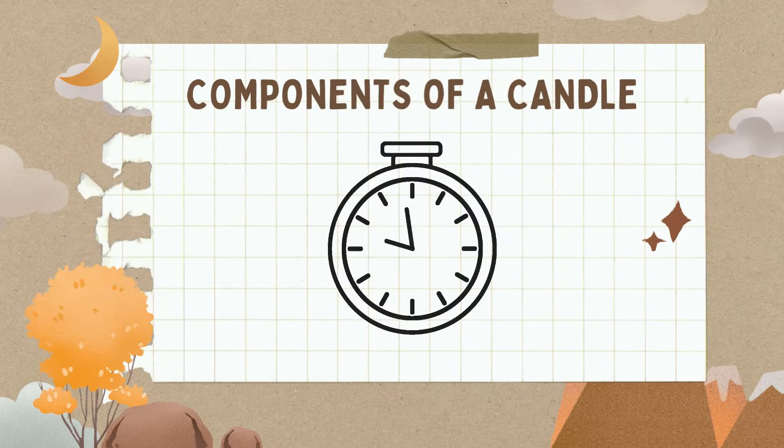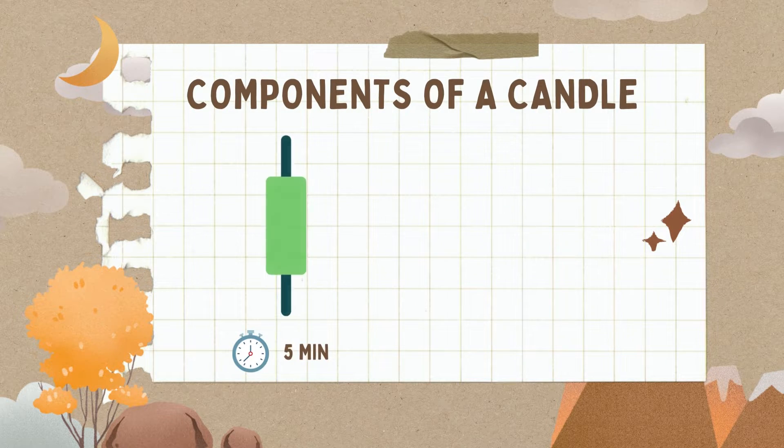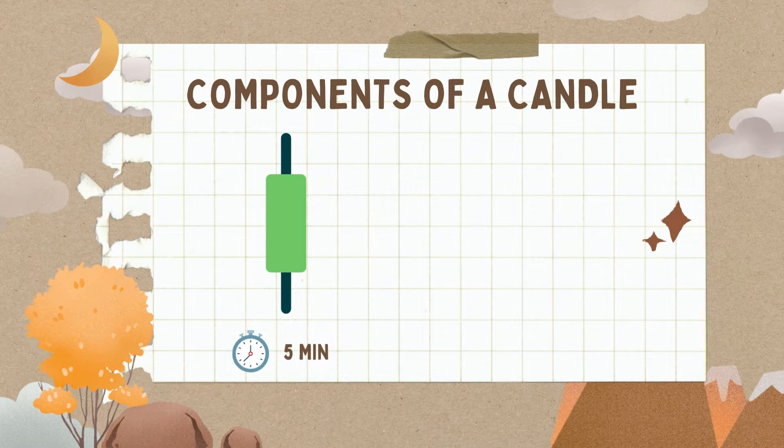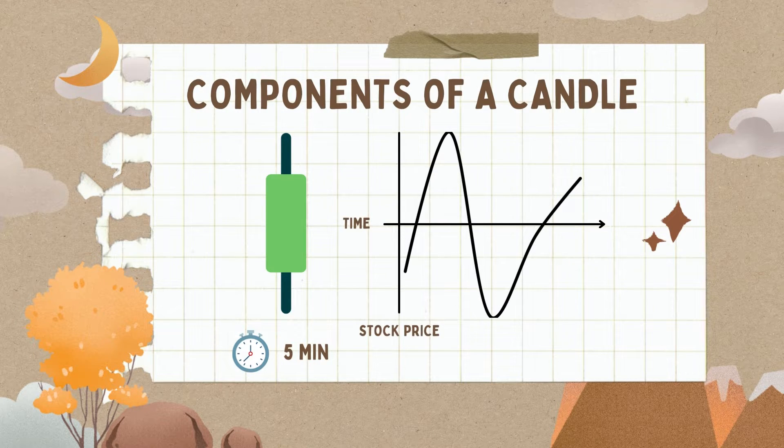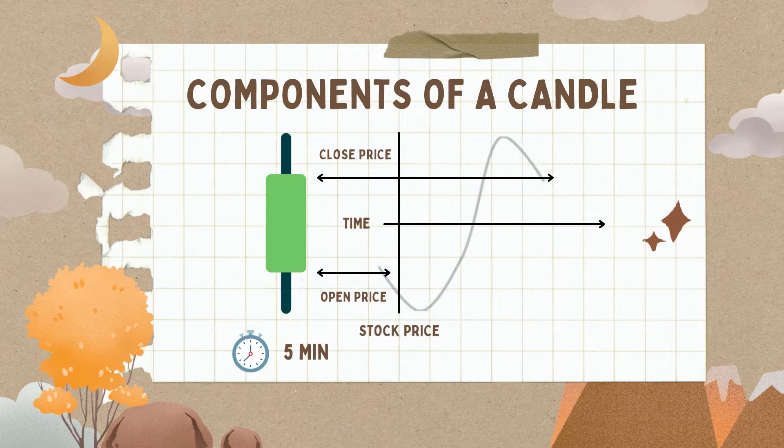We know a candlestick is within a specified time period. Let's say this is a 5-minute green candle. And within that 5 minutes, the price action can be like this. Or like this.